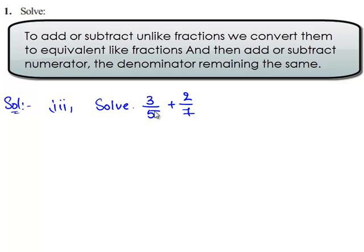So here in this question we need to add two fractions which have different denominators. To add two fractions we should obtain a common denominator. Therefore to add 3 by 5 and 2 by 7 we need to obtain a common denominator.